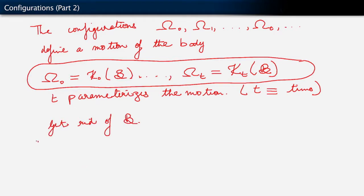Here's how we can do it. We have our body B. Let me look at one of these maps. Let me look at the very first one, kappa naught of B, which takes us to a configuration which we called omega naught. And we have ever present our basis vectors reminding us that we are in three dimensions.